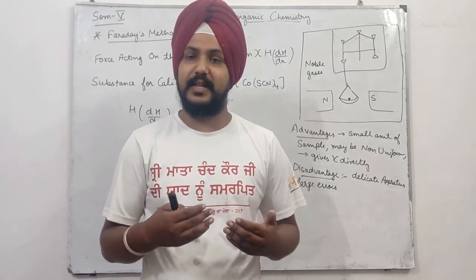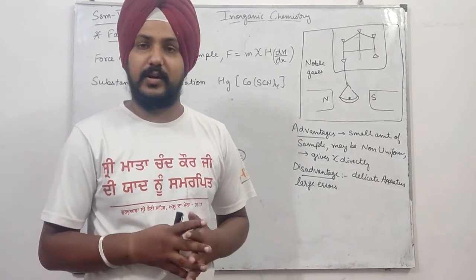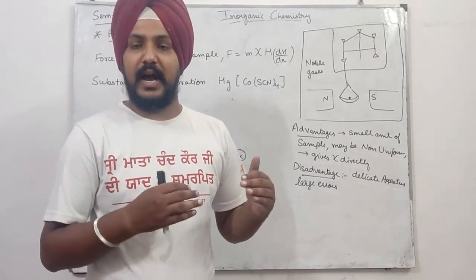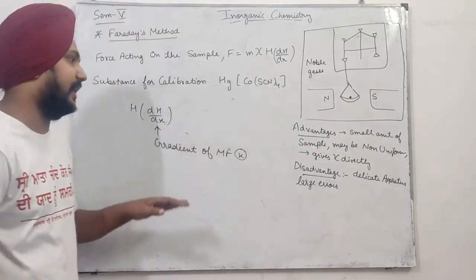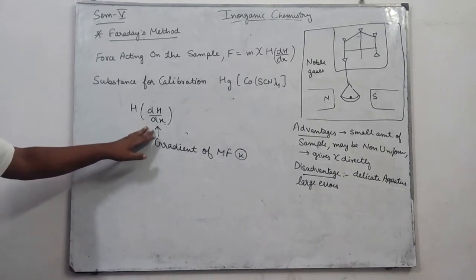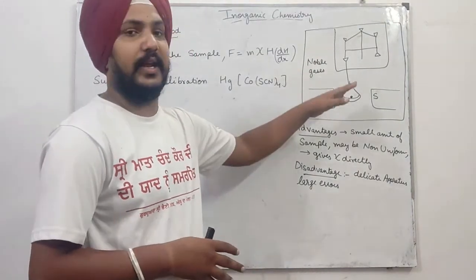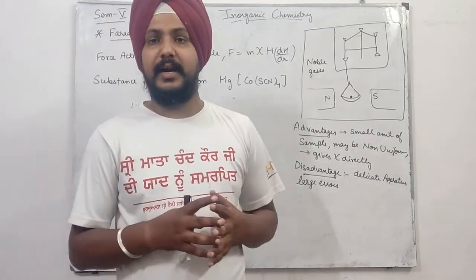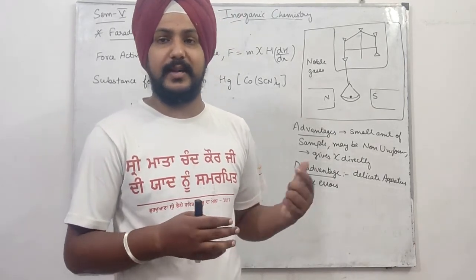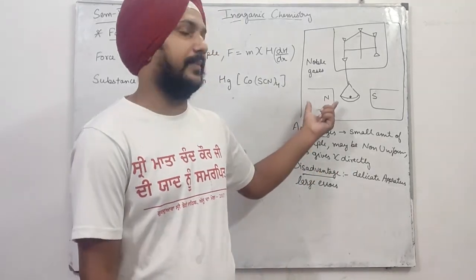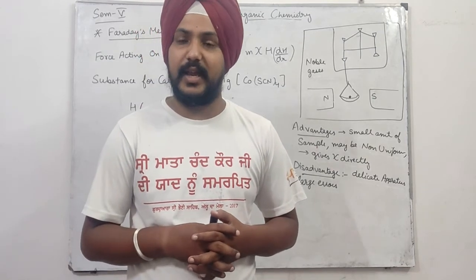Gouy's method और Faraday method में differences repeat करता हूं: पहला - Gouy's में large amount, Faraday में small amount of sample लेना है। Second - Gouy's में आधा sample बाहर रखते थे, यहां sample completely magnetic field के अंदर है। Third improvement - magnetic field के साथ-साथ उसका gradient भी calculate किया ताकि magnetic strength constant रहे। Last improvement - experiment inert atmosphere में perform करवाया ताकि external factors participate न कर सकें। Procedure वही रहता है: sample का weight before experiment करते हैं, magnetic field start करने के बाद weight increase होता है, दोनों weights का difference लेकर magnetic susceptibility calculate करते हैं।